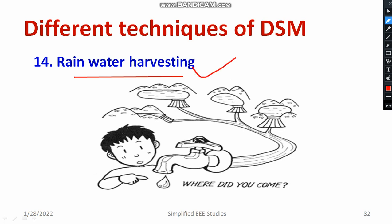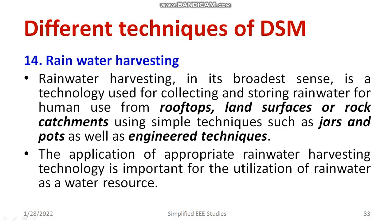There are different civil engineering techniques to save water using the rainwater harvesting technique. Engineering work can be implemented to save the water. Rainwater harvesting, in the broadest sense, is a technology used for collecting and storing rainwater for human use from rooftops, land surfaces, and rock catchments, using simple techniques such as jars and pots as well as different engineering techniques. The government can make a rule such that rainwater harvesting is a must for newly constructed buildings. If such rules prevail, it definitely helps a lot from both the customer and utility point of view. Water can be stored, and new application of appropriate rainwater harvesting technology is important for the utilization of rainwater as a water resource. This is one of the best solutions for the energy crisis.